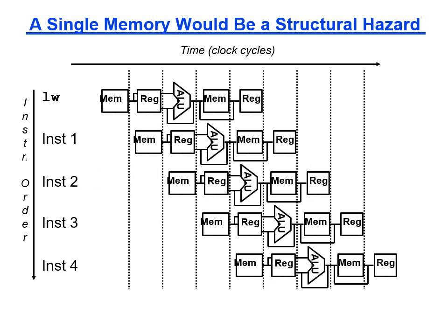If there was only one memory with a single read port, it would not be possible to fetch an instruction and load data at the same time — you couldn't read from the same memory on the same port simultaneously. So instead, we assume two split memories, which in practice are implemented by split instruction and data caches.